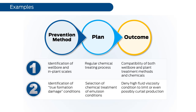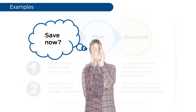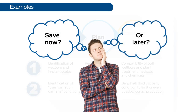Many other examples prevail throughout a typical producing operation. A properly designed corrosion inhibition treatment plan in place will have an operating cost to protect rod pump rods, but the absence of such a plan will likely lead to a much more costly rod failure frequency.